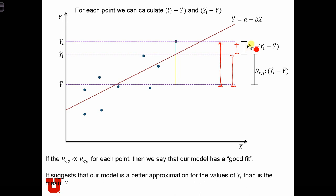On the other hand, if our residual sum of squares is very big in comparison to the regression sum of squares, that implies that our regression line is actually not very close to the individual data points — it's more or less flat and close to our mean. In that case, we don't have a very good approximation of yi using our regression line. In fact, if the residual sum of squares are very big in the extreme case, then the mean is just as good an approximation of y as the regression line.